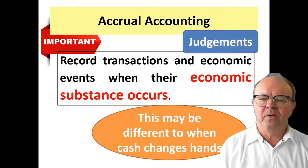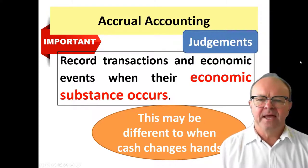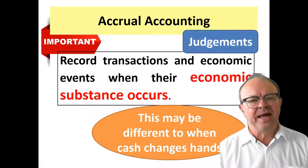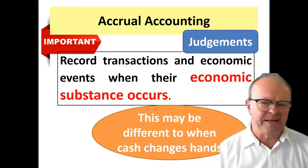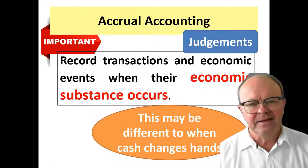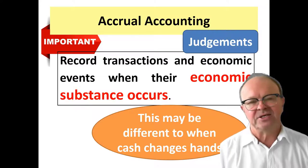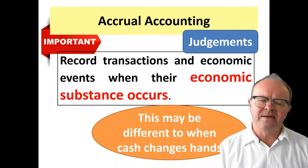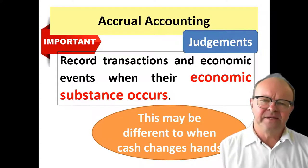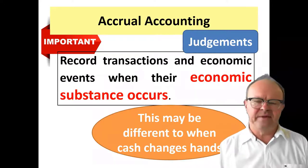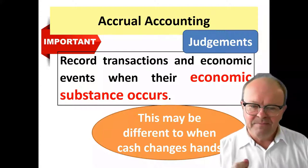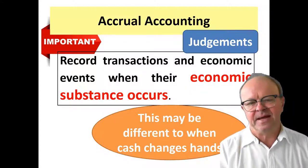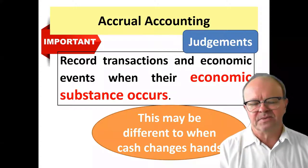The key point with accrual accounting is that it requires judgments about when the economic substance occurs. Cash is very clear cut — everybody can tell cash has changed hands. But in terms of the economic substance, it requires judgments and different people can make different judgments. That's quite legal, but judgments are involved and you need to be able to make those judgments.